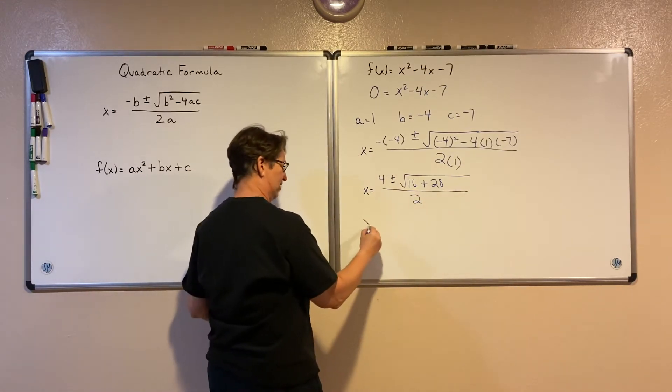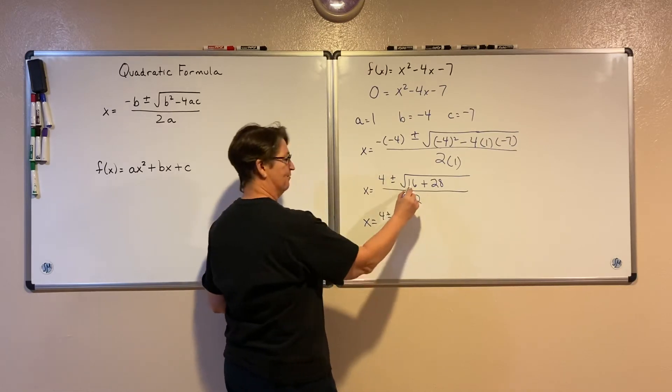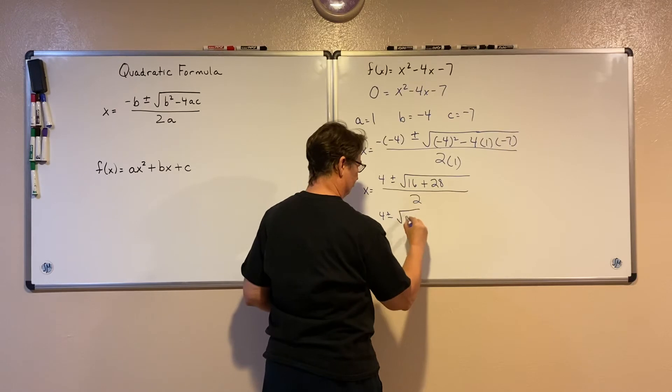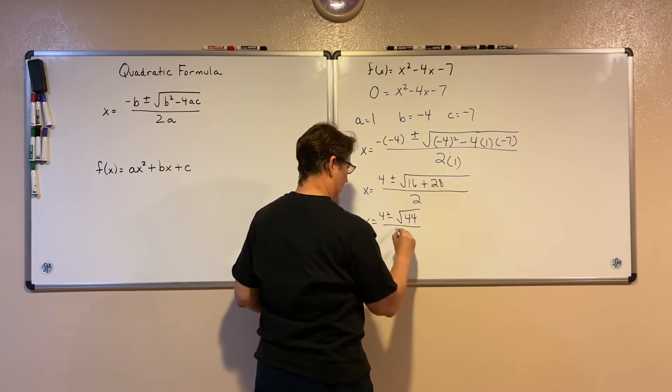I'm going to add underneath my radical there, so that I have 30, 44. So it's the square root of 44 all over 2.